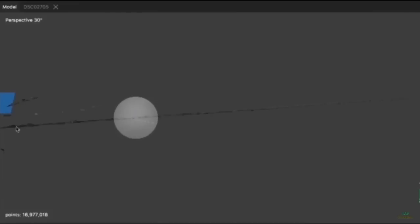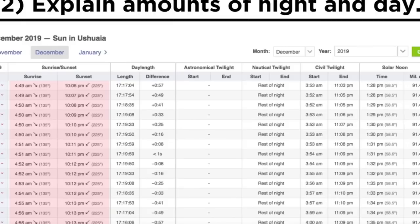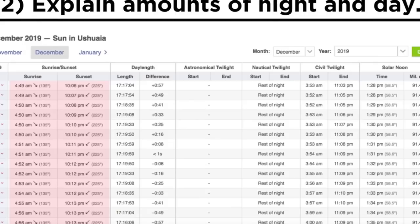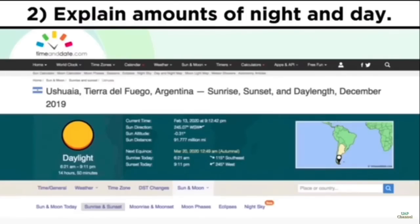But you don't really have to go all the way to Antarctica. Just go to the tip of South America, like this town where people live. Or don't even go there. Just look up times of sunrise and sunset on the internet. In mid-December, sun rises earlier than 5 a.m. and sunset is later than 10 p.m.